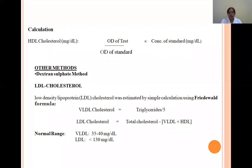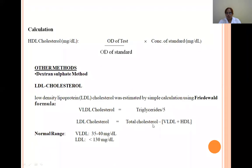LDL cholesterol is estimated by simple calculation using the Friedewald formula. VLDL cholesterol = triglycerides ÷ 5. LDL cholesterol = total cholesterol − (VLDL cholesterol + HDL cholesterol). Normal ranges: HDL is 35–40 mg/dL; LDL is less than 130 mg/dL.